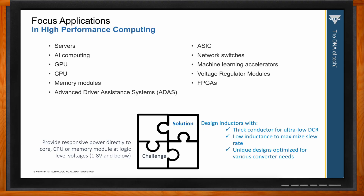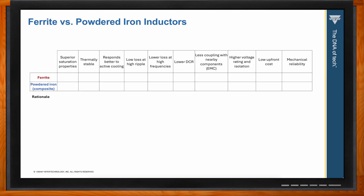Part of the challenge for selecting inductors is that there are multiple core materials to choose from, broadly categorized into ferrite and powdered iron — which you'll hear referred to as composite inductors. Each core material has its own advantages, and deciding which one to use depends on performance requirements as well as project constraints.